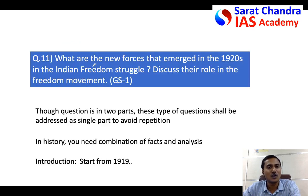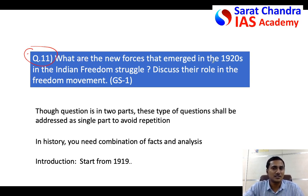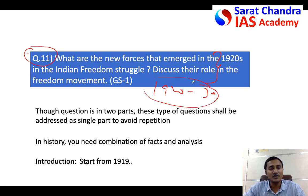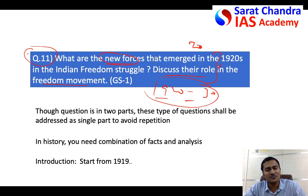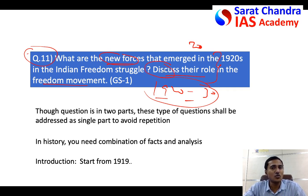I will explain this concept using Question 11 from the previous video — go back and see that answer if you haven't. The question asks you to discuss the role of new forces that emerged in India's freedom movement between 1920 and 1930. You can easily write 20 pages on that because between 1920 and 1930 there were several forces — communist forces, socialist forces, peasant forces, student forces, and many more. So how do you write the answer in just one and a half pages while also showing the evaluator that you have good knowledge of all the forces and facts?